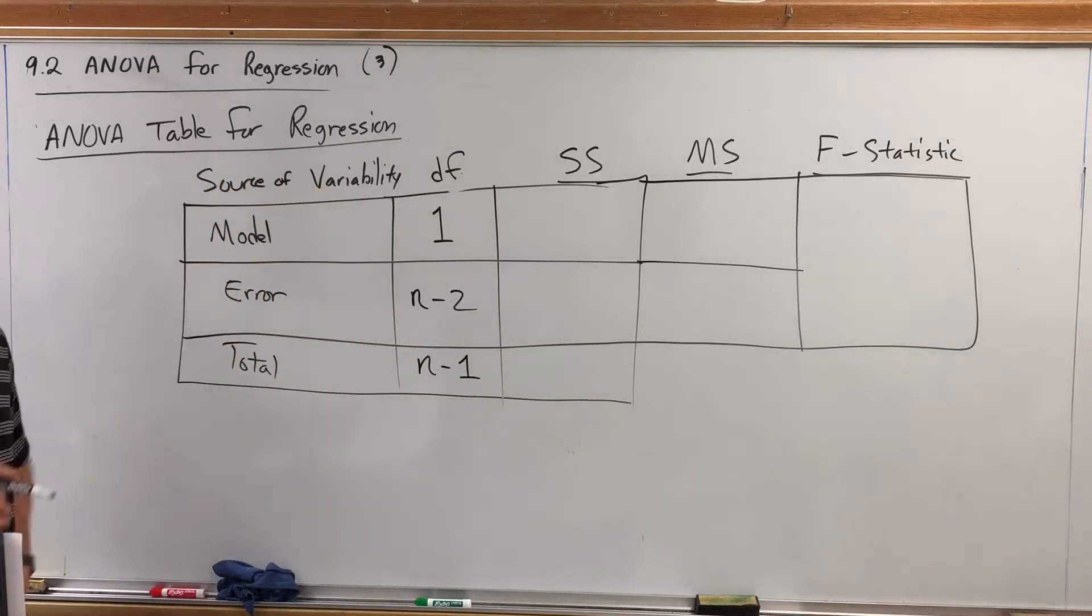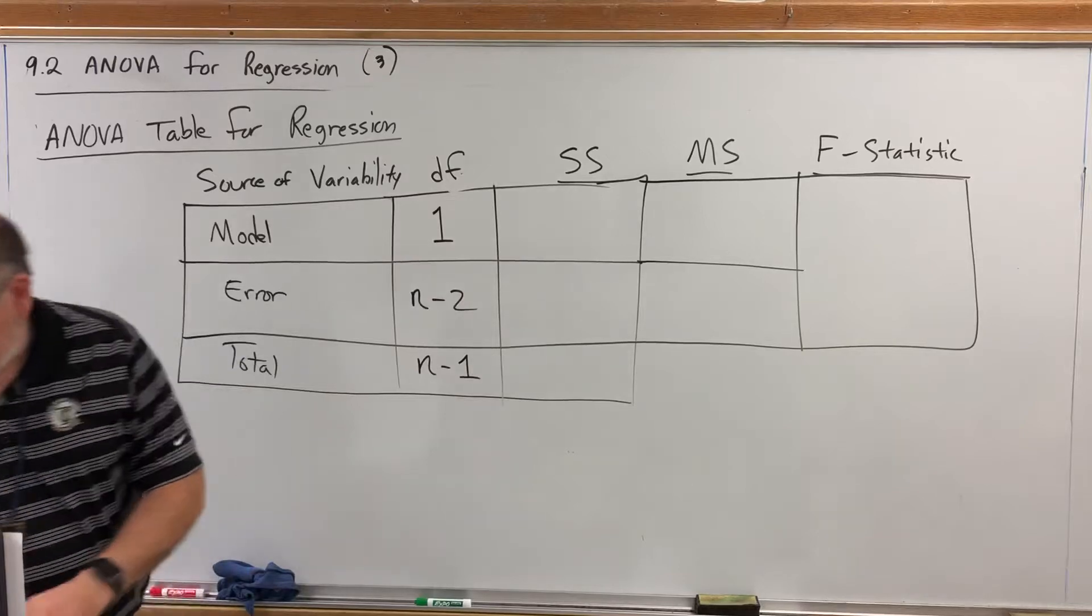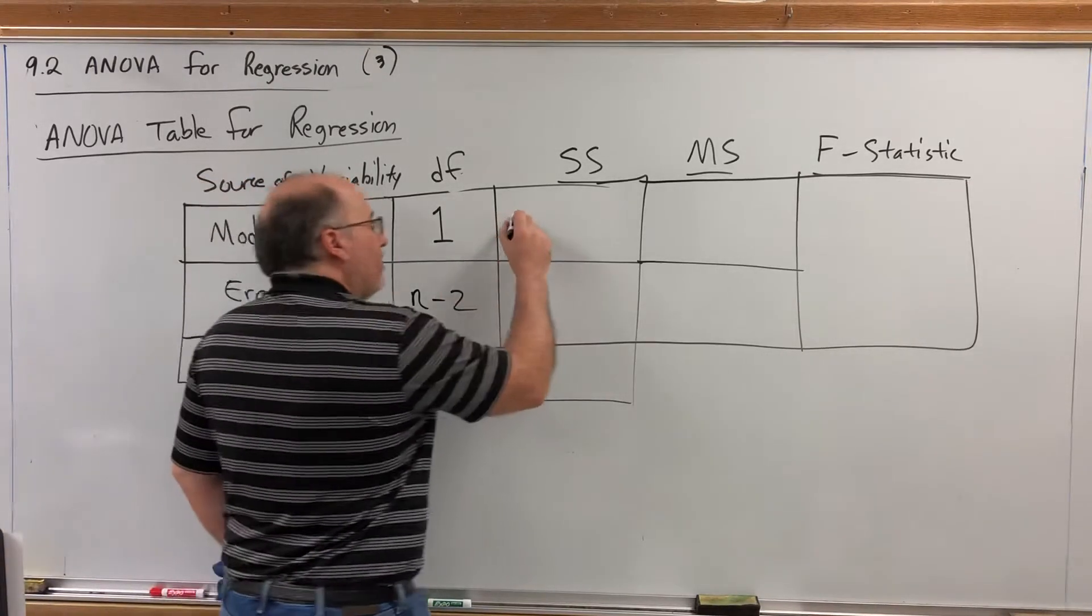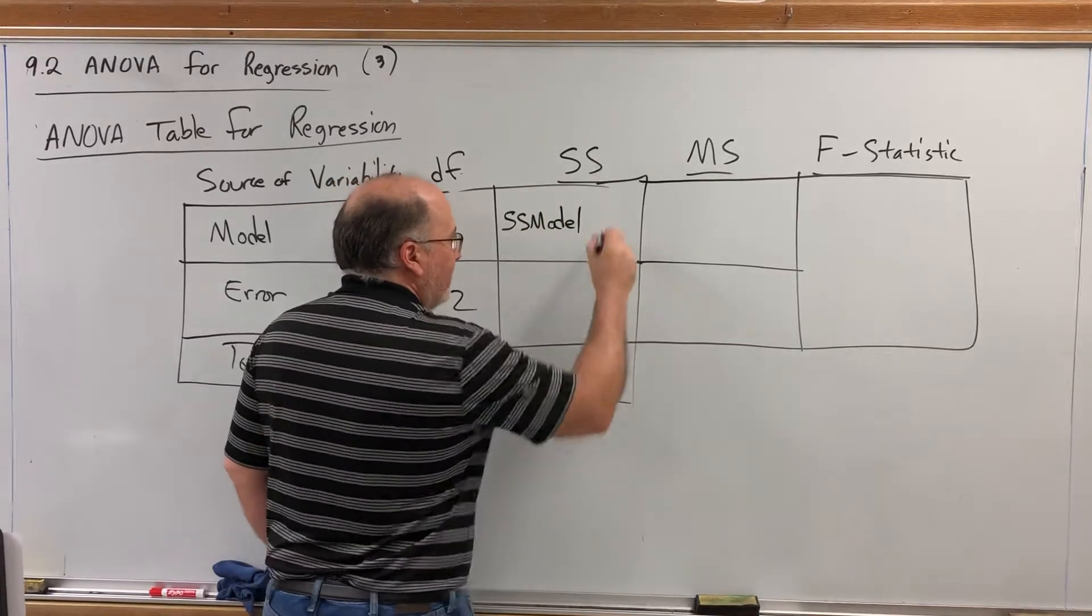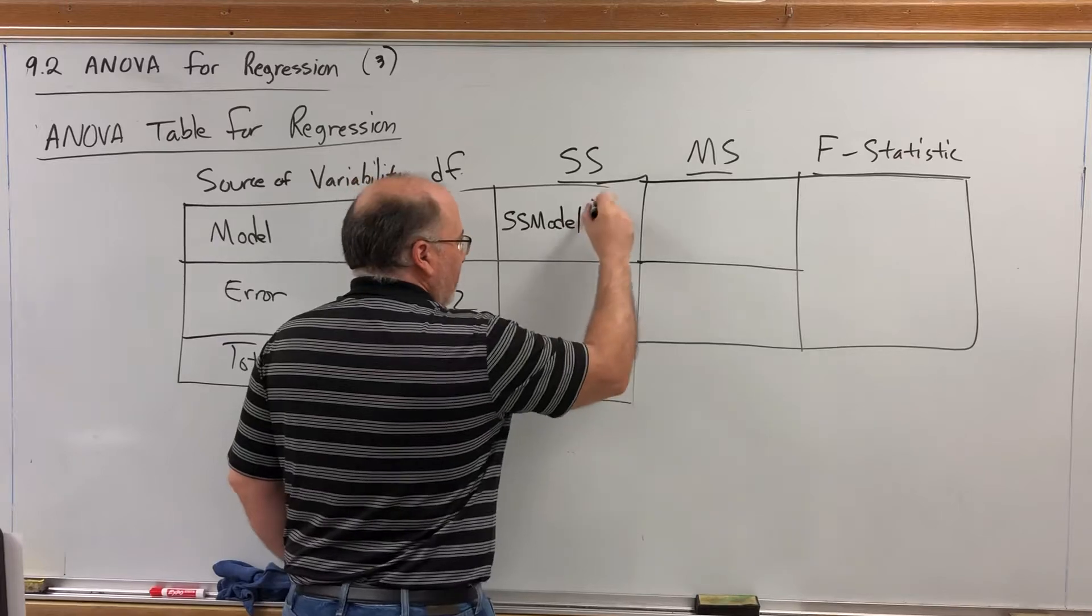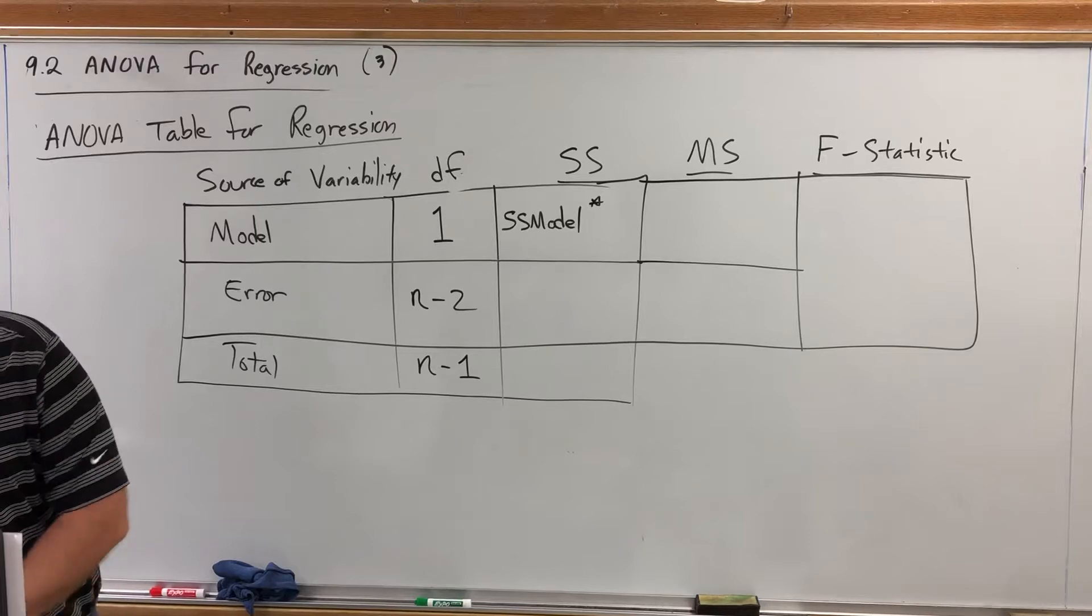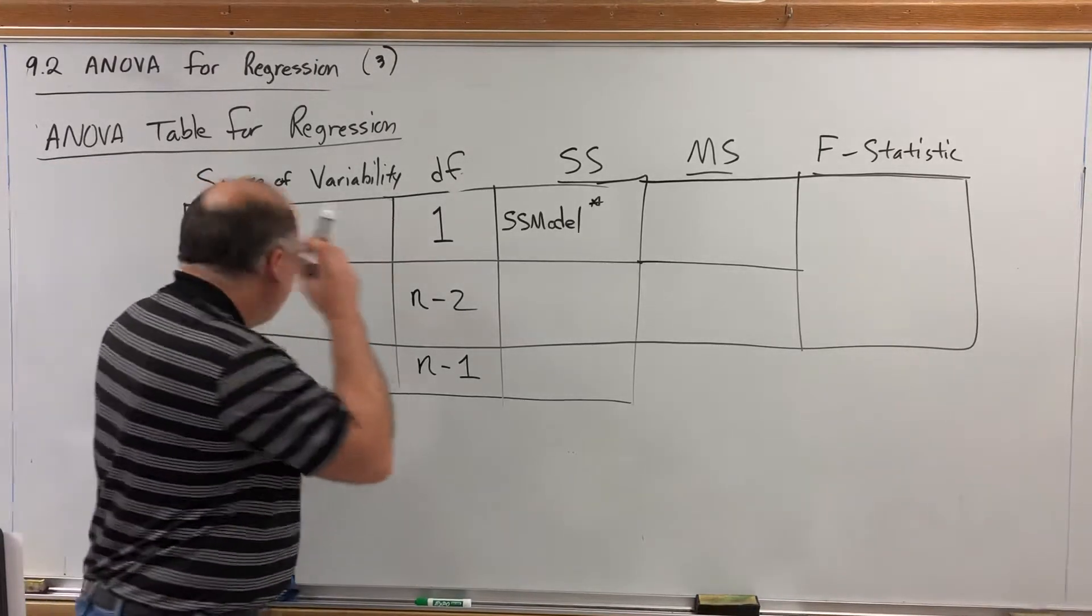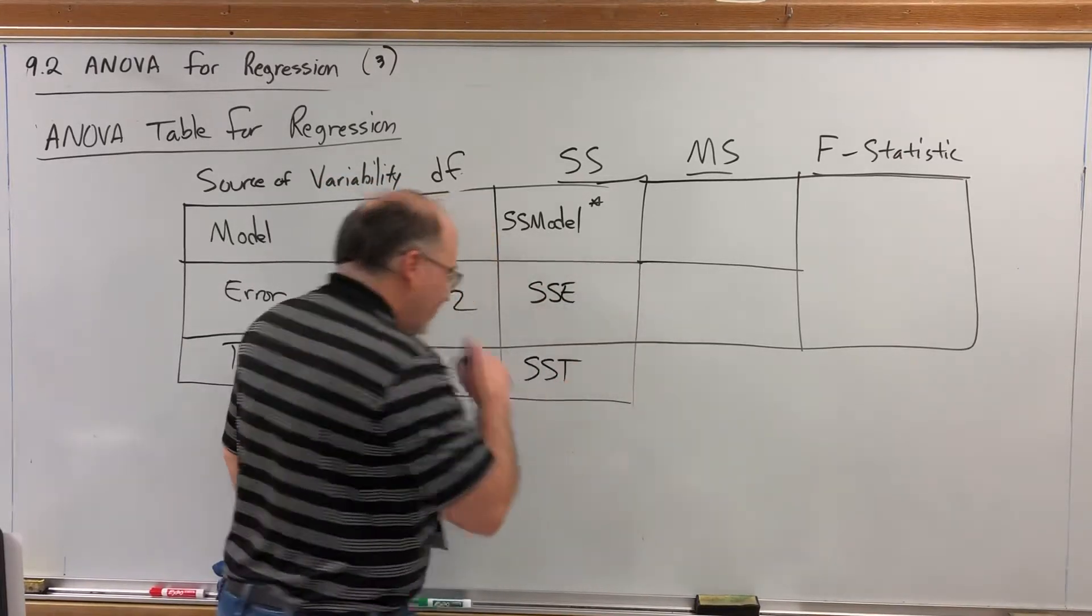There are formulas for the sum of squares. Most of the time these will be given. They are additive in the sense of the first two add up to the third one. The sum of squares for the model is usually called SS model, sometimes abbreviated SSM. And of course the sum of squares for error is SSE. And the total sum of squares is SST.